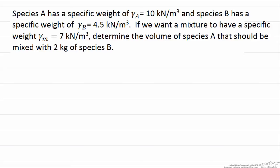So let's take a look at our example where we have species A that has a specific weight of 10 kN per m³ and species B that has a specific weight of 4.5 kN per m³.